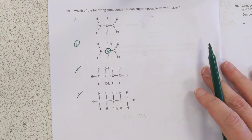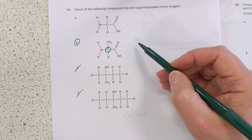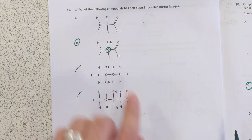19, non-superimposable mirror images. Which one has got a chiral, which one has an enantiomer, and it's got to have four different things attached to a carbon, so it's that one there.